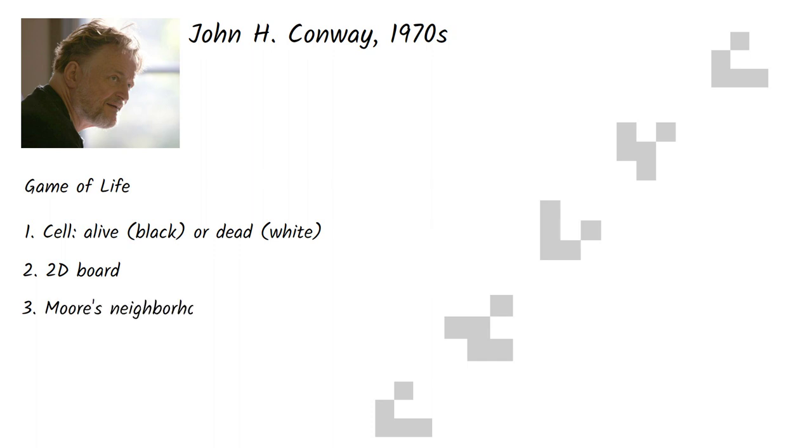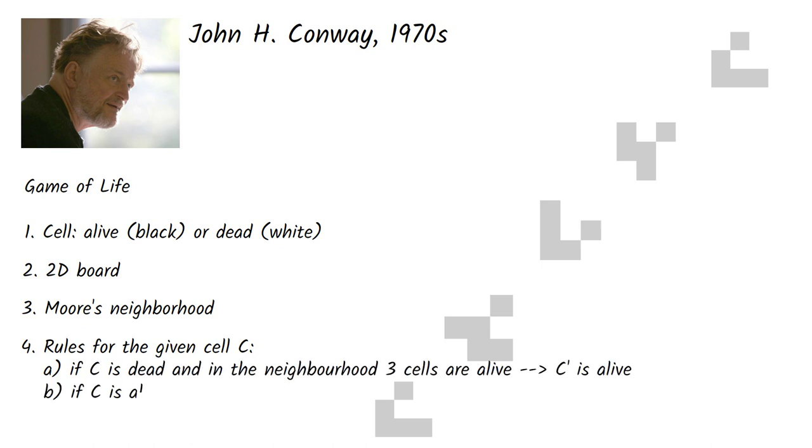One thing that you often see in the game of life implementations is that the edges are wrapped around. If we compute the new state for a cell at the top of the board, its neighborhood contains three cells from the bottom of the board and vice versa. Then there are the rules. If we have a cell that is dead, meaning white, we look to its neighborhood. If three cells in the neighborhood are alive, meaning black, then the cell will become alive in the next turn. If the cell is alive and there are two or three cells in the neighborhood that are also alive, then it will remain alive. Otherwise, if there are too few alive cells around, or too many alive cells, the cell dies.